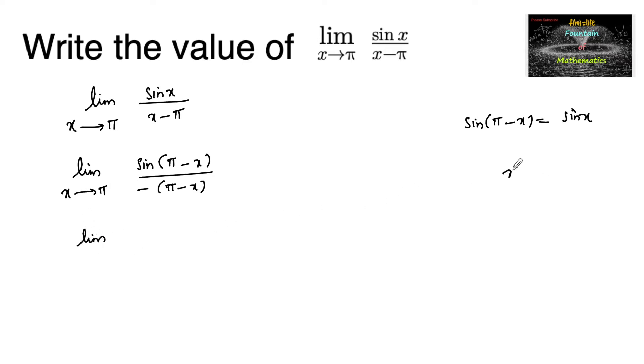Limit x tends to pi, or we can write as x tends to pi, h tends to 0, where h is equal to pi minus x. When we consider h is equal to pi minus x.